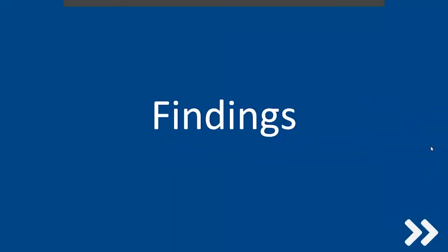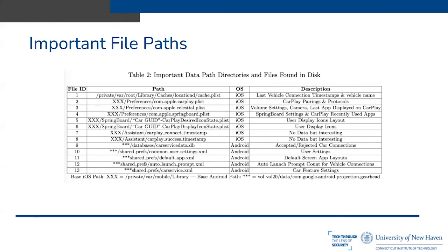Looking at the findings, we have the important file path directories and files found within the disk, listing both Apple CarPlay and Android Auto relevant files. The CarPlay Connect timestamp and CarPlay 6X timestamp files are interesting to note — they don't contain data, but the file timestamps themselves are associated with when CarPlay was connected and whether the connection was successful.